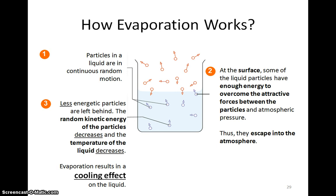There are other differences between boiling and evaporation. But before I talk about that, let me first describe how evaporation occurs. Particles in the liquid, such as alcohol, are in continuous random motion and they have different speeds. At the surface, some of the liquid particles have enough energy to overcome the intermolecular attractive forces and atmospheric pressure, and thus they escape into the atmosphere.